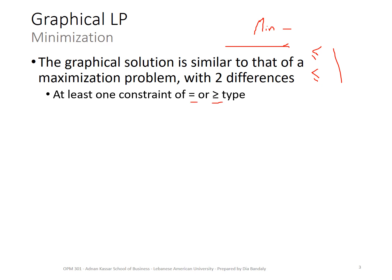The second difference: graphically, when solving a minimization problem, instead of moving the objective function line away from the origin, we move it towards the origin. And the last point that the line touches will be your optimal solution.